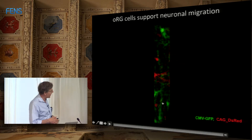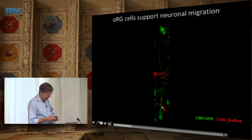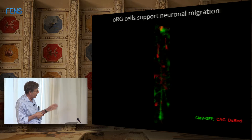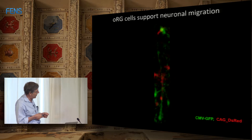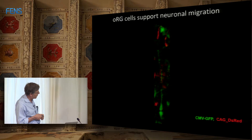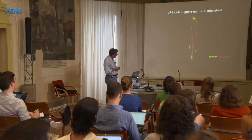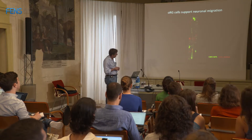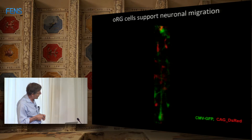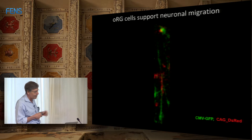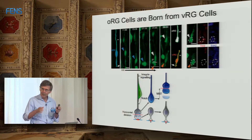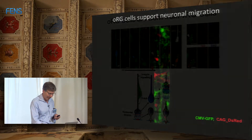Not only do ORG cells generate neurons, but they also support the migration of neurons. Using two different promoters — one driving GFP in progenitors and another driving a red marker in neurons — we can see a red neuron jump onto an ORG fiber and migrate along it. This demonstrates that the outer radial glial fibers both produce and guide the migration of neurons to the cortical plate.